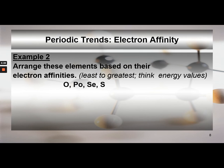Now consider oxygen, polonium, selenium, and sulfur. These elements are all in the same group. Put them in order from least to greatest in terms of their energy values — pause and check yourself. Oxygen has a smaller, more negative value, meaning it has a higher affinity to form a negative ion than polonium, which sits further down the group.